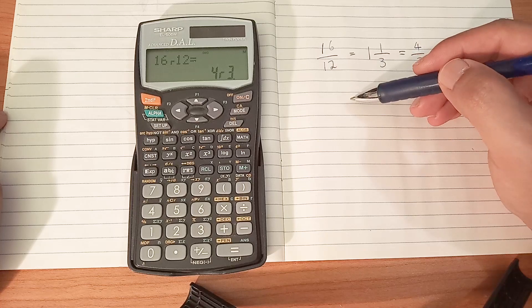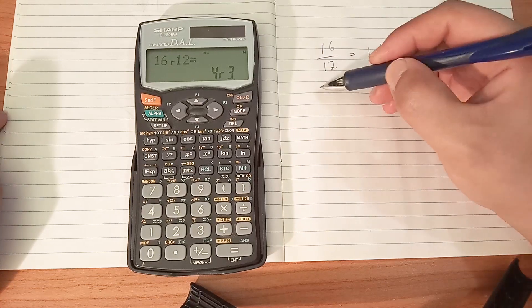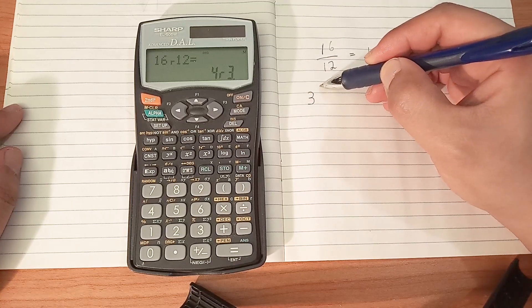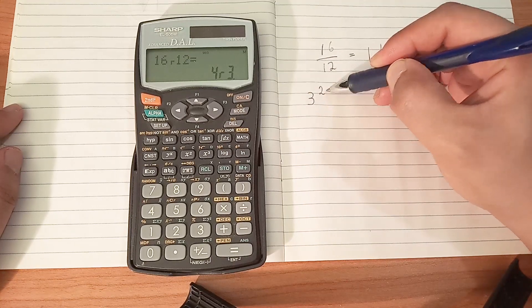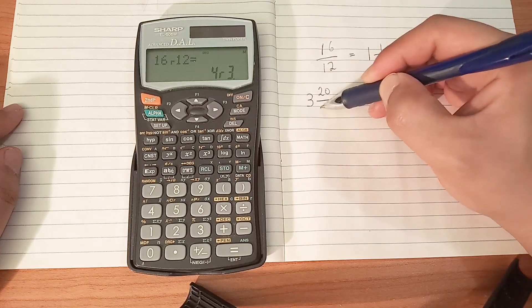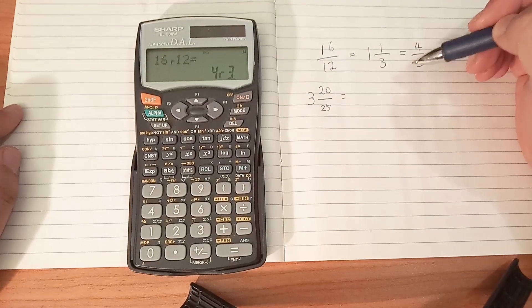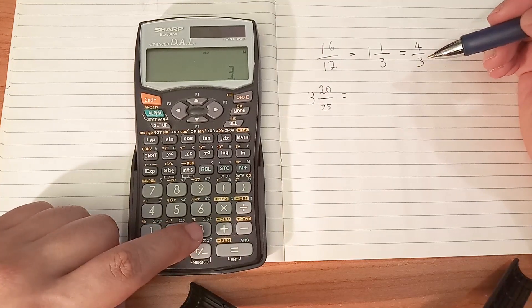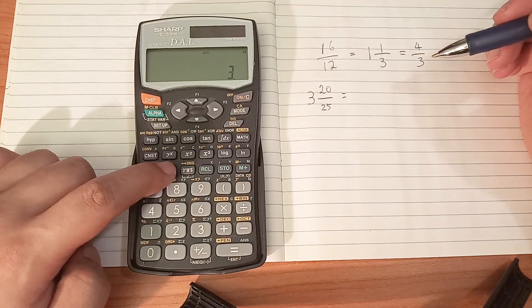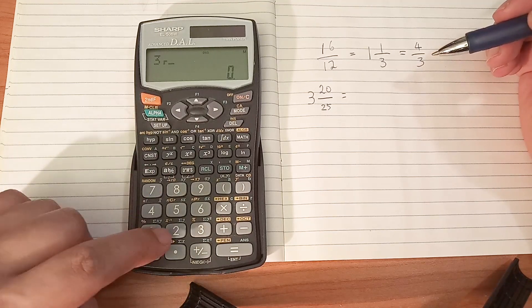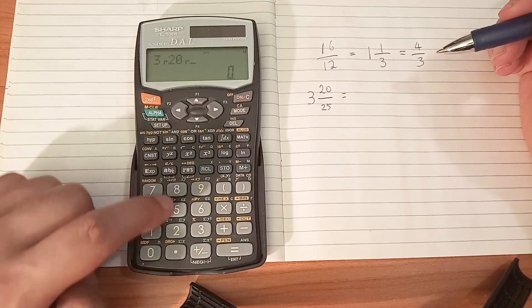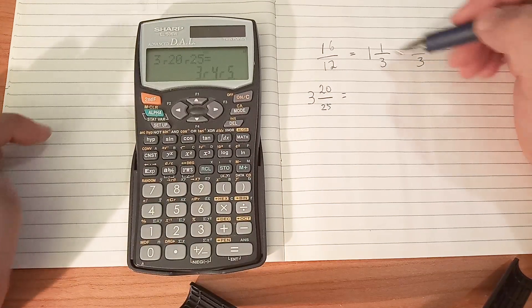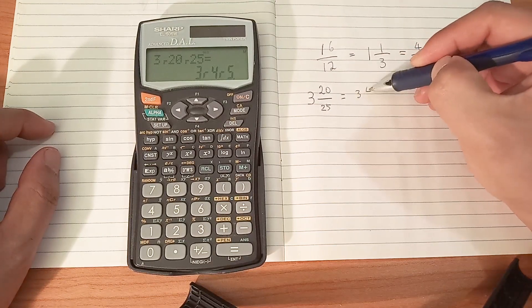The next thing we're going to try is simplifying a mixed number fraction. Let's try and simplify 3 and 20 over 25. I'm just going to type in 3, use the fraction key, then 20, fraction key again, then 25. And what do you get? 3 and 4 over 5.